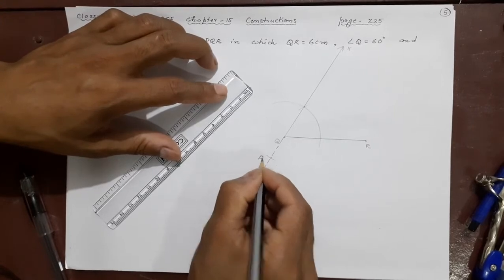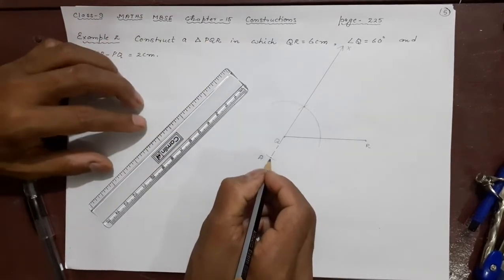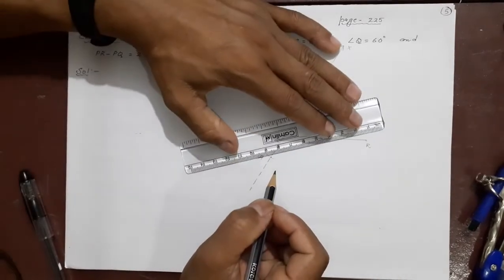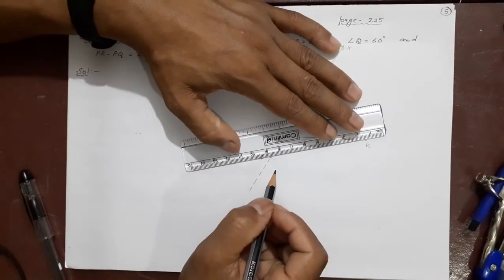So you can make this as A. In ABC we used to make P here but in PQR you can make A here. So now this will be AR, just like PC it is AR here.